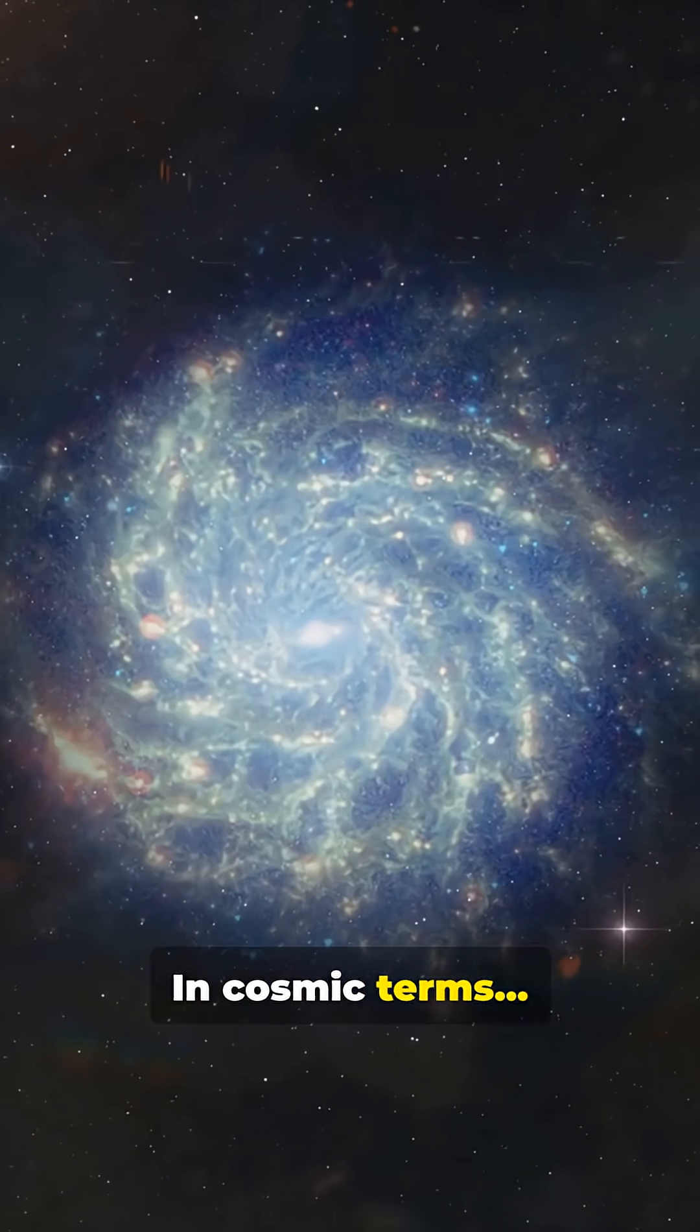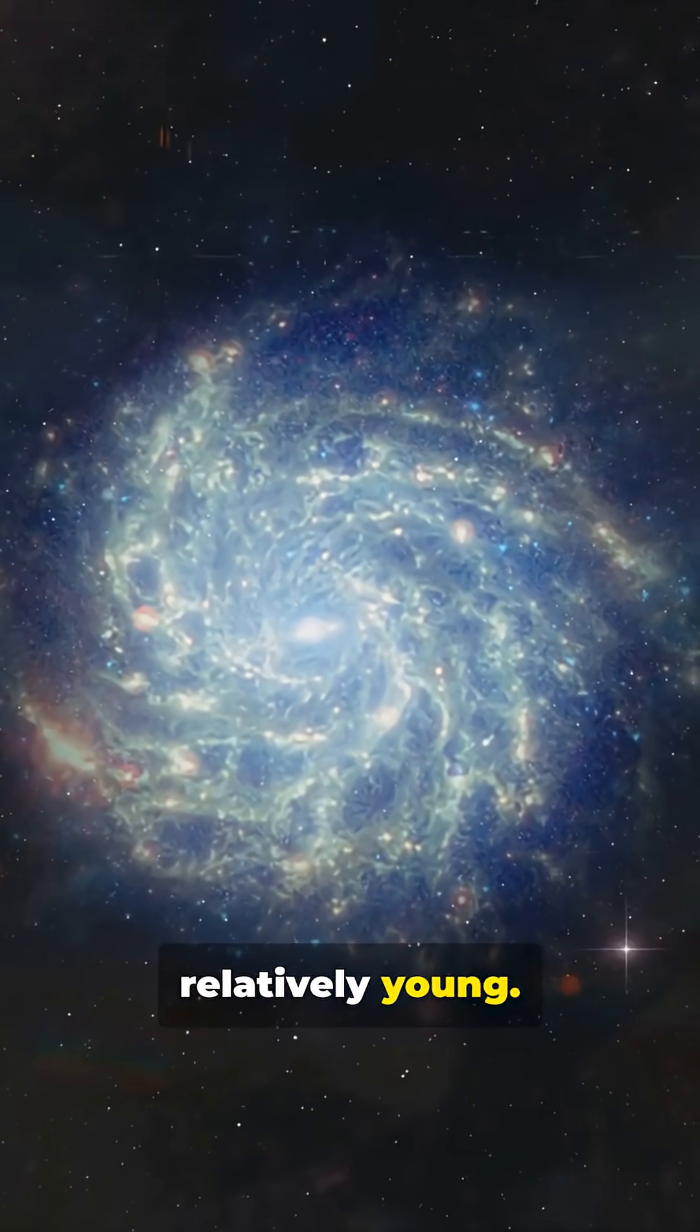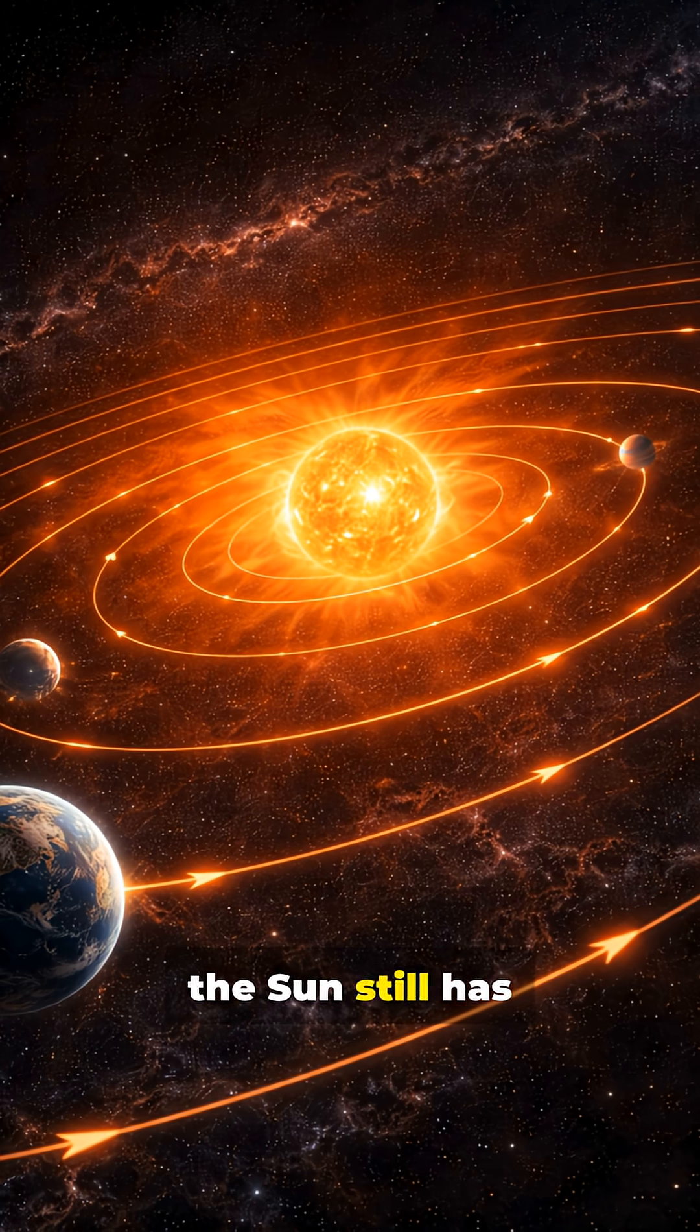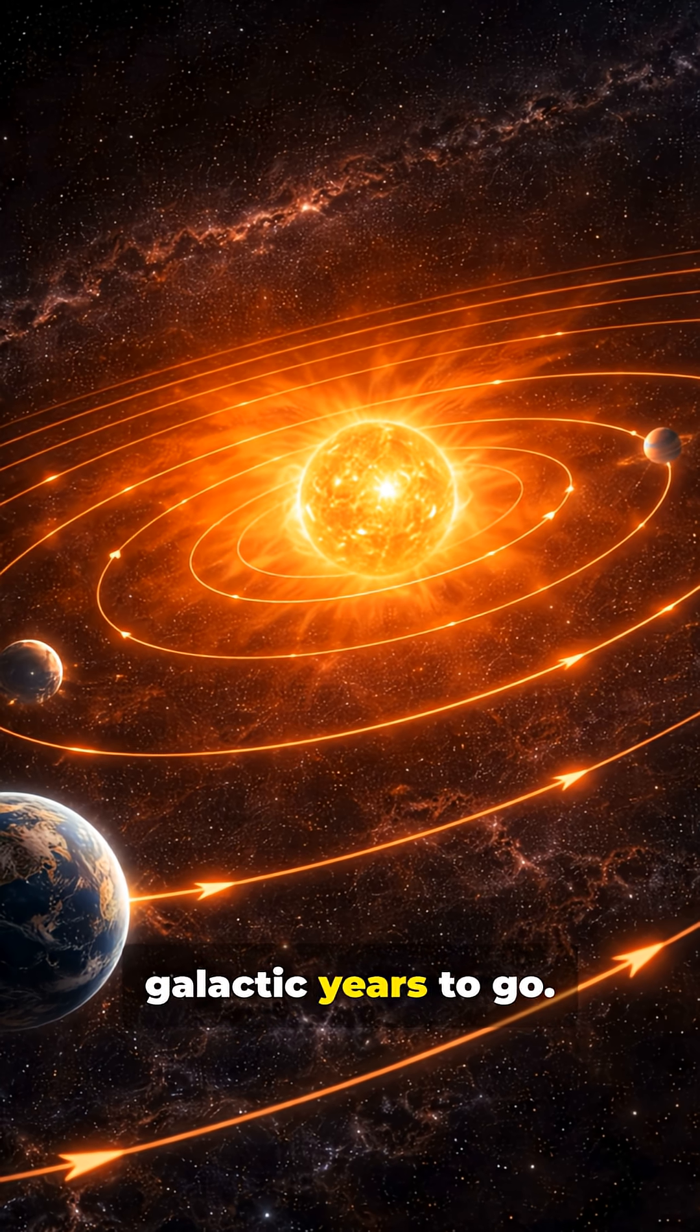In cosmic terms, the Sun is still relatively young. The Sun's total stable lifespan is about 10 billion years, powered by hydrogen fusion in its core. With roughly 5 billion years left, the Sun still has about 22 more galactic years to go.